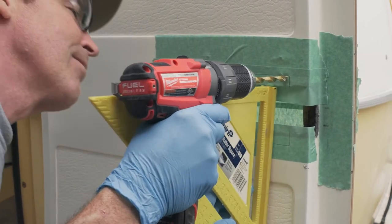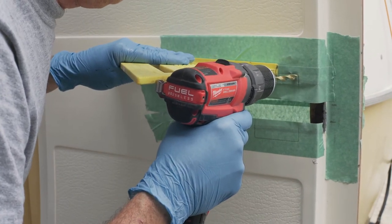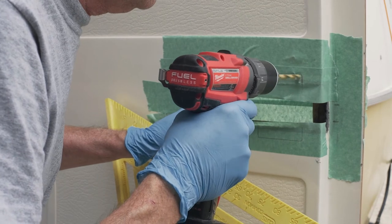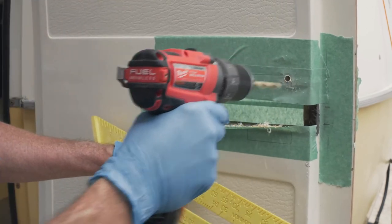Using a 5⁄16 inch drill bit, drill holes through the door at the corners. Make sure you drill these holes at 90 degrees to the door surface. These holes will locate the new opening on the outside of the door.